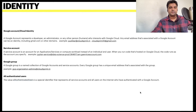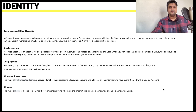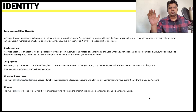The fourth type is all authenticated users — this refers to all authenticated users within your organization boundary in GCP. If you need a resource available to all organization users, you use this flag. The fifth type is all users, which allows any access to all authenticated and unauthenticated users — essentially making the resource public. These are the only five identity types you deal with in GCP IAM.